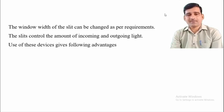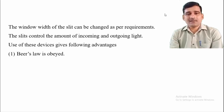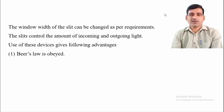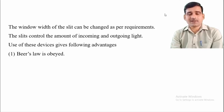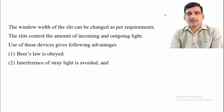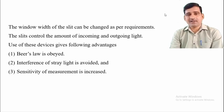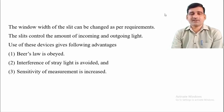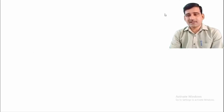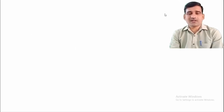The use of these devices gives the following advantages: it helps obey Beer's law (absorption directly proportional to concentration), interference of stray light is avoided by adjusting the slits, and the sensitivity of measurement is increased because sensitivity depends on the intensity of light and detector response. This covers the basic components used in the instrumentation of the spectrophotometer, including the radiation source.